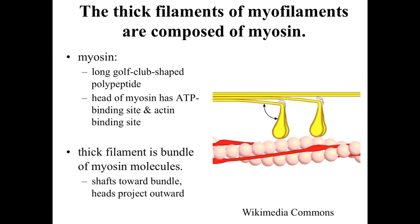The thick filaments are myosin and myosin-associated proteins. Myosin is a long, golf club-shaped polypeptide. Within the head of the golf club, we have the ATP binding site — the ability to interact with energy within the cell — as well as the actin binding site. So it's the head of the molecule that interacts with the actin thin filament. The shafts of the golf club-shaped molecule are projected towards the thick filament bundle, holding the structure together. The shafts face towards the central structure; the heads face out towards the periphery, allowing interaction with the thin filaments.